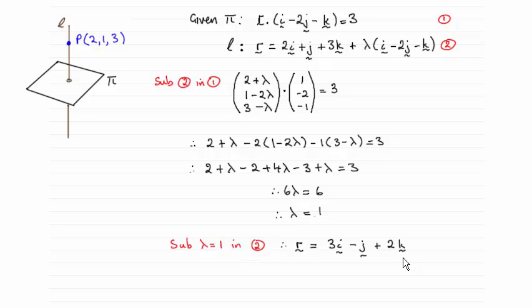So to do this, what we need to do is equate the position vector r for the equation of the line L, which we found in the first part of the question, and substitute it into the equation for the plane.